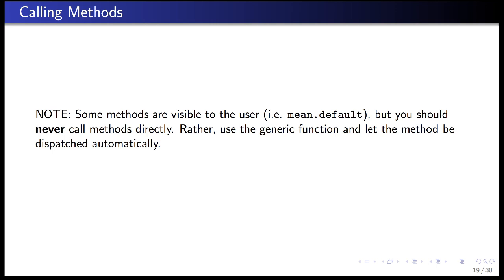You should never call methods directly in your code — never call mean.default() explicitly. Always use the generic function and let the method be dispatched automatically. This way, if methods change or a special numeric method for mean is later implemented, your code will still do the right thing. Under the S4 system, it's not possible to call underlying methods directly, so this is only a concern under S3.